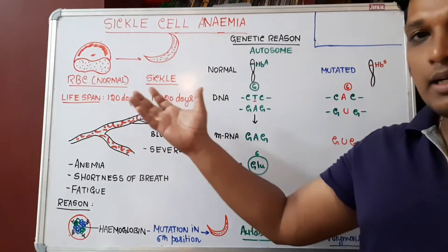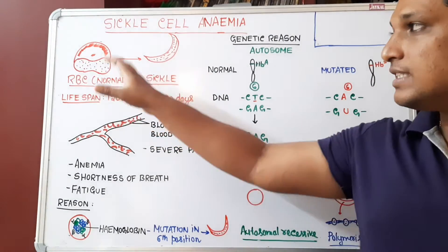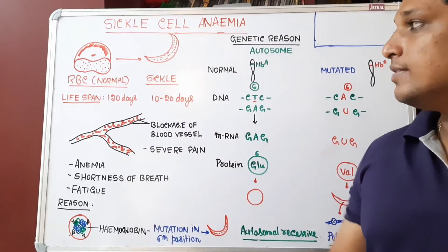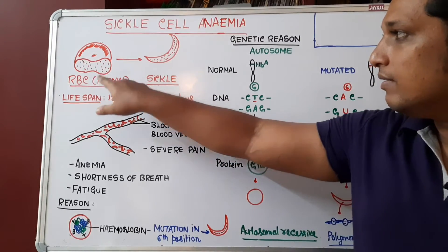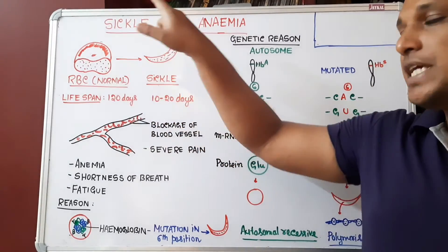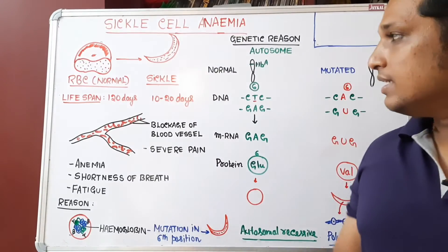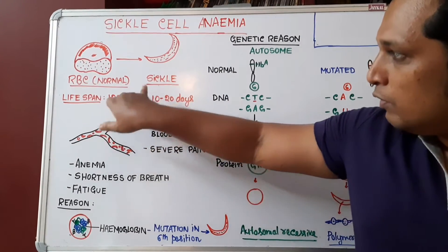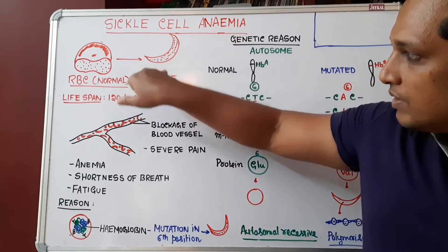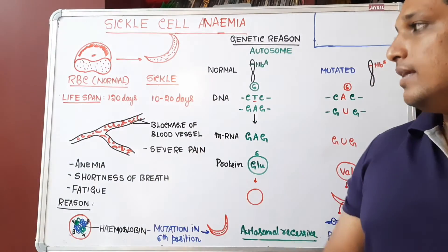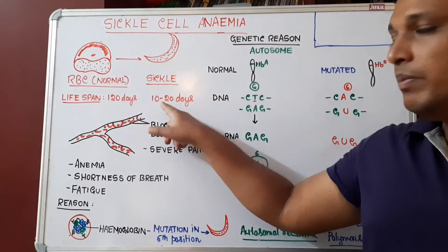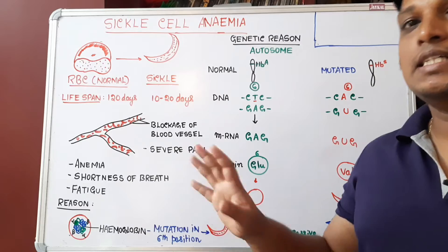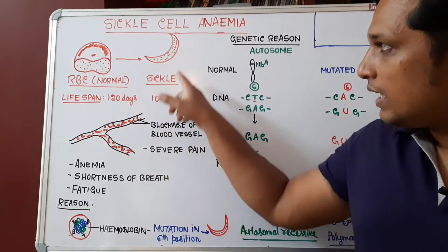After 120 days, bone marrow and spleen are involved in regeneration and destruction of RBCs. In sickle cell anemia, the RBC changes from a biconcave disc shape to a sickle shape. If the RBC becomes sickle-shaped, its lifespan decreases — instead of 120 days, it will be alive for only 10 to 20 days, after which it is destroyed.